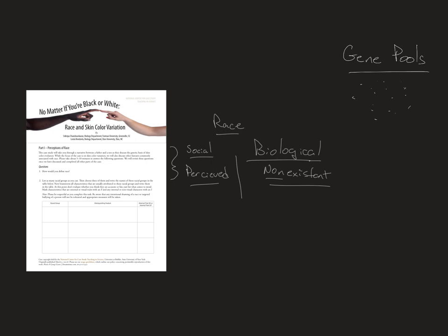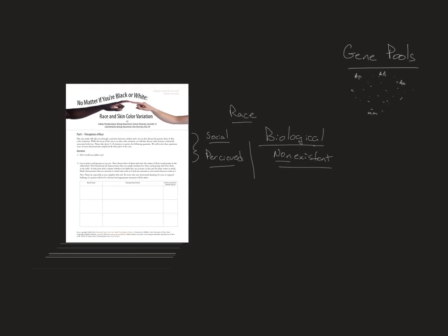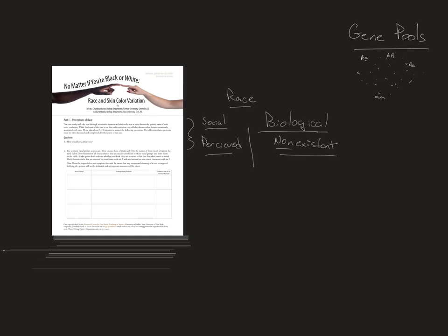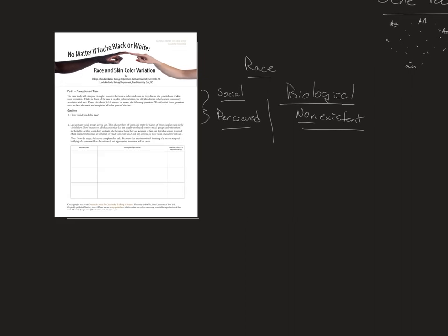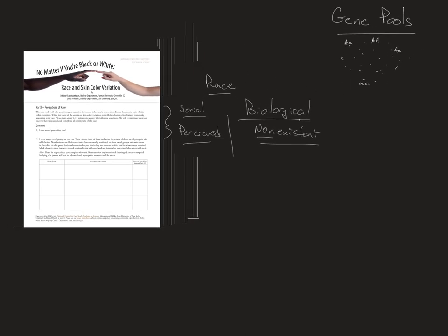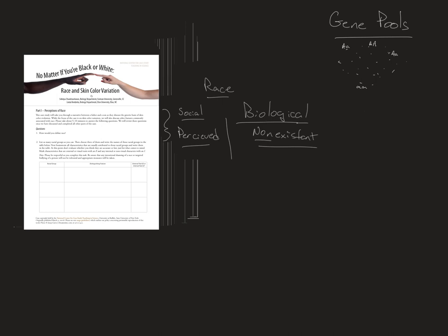A gene pool contains the various genes and alleles individuals have. Pick a gene, let's call it A — how many little a's and big A's do you have in this pool of genes? That's only one gene, and as we discussed earlier, it's likely tens of thousands of genes, at least ten thousand, and each one of those interacts with the others.